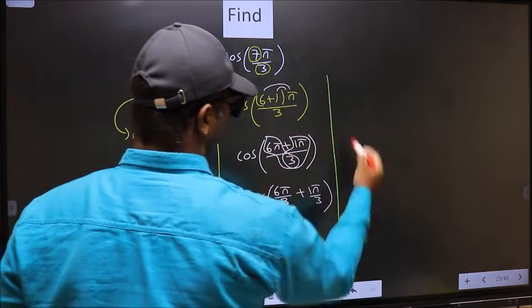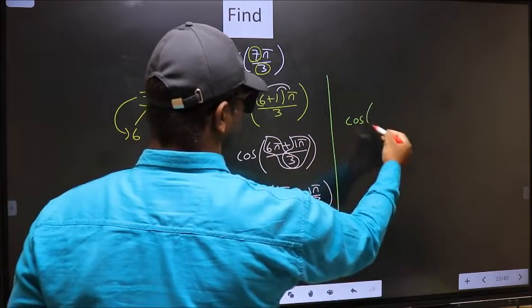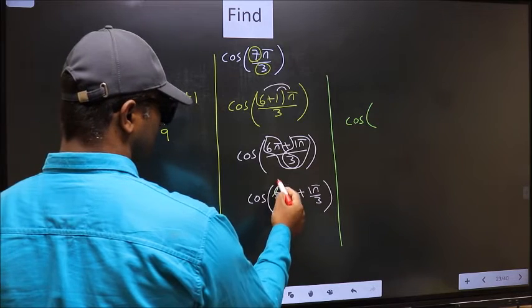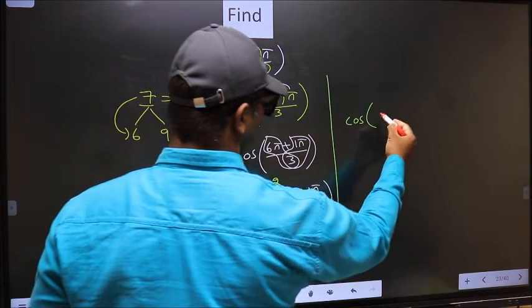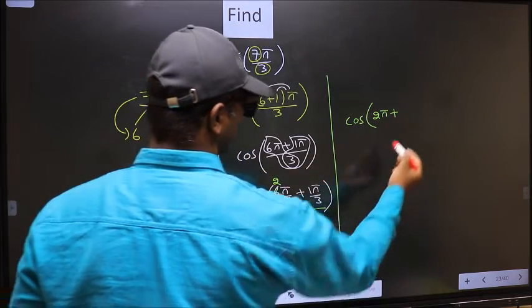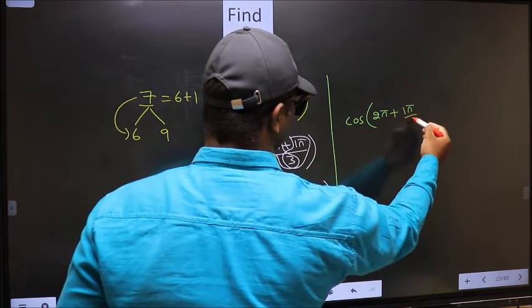Next. Cos. Now here, you should cancel. 3 ones, 3 twos. So, we get 2π plus this no change, 1π by 3.